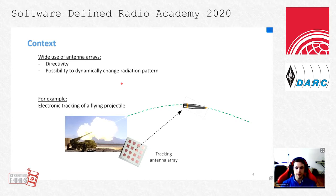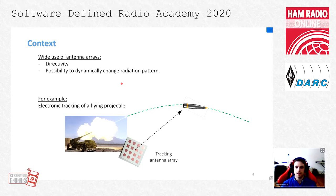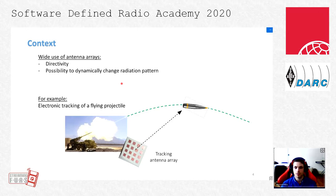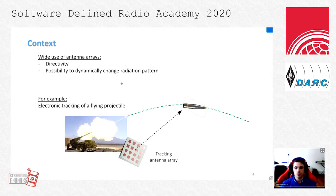As part of this team, we widely use antenna arrays for the high directivity they offer and the possibility to dynamically change their radiation pattern by weighting each antenna element signal. Among our applications, we can be willing to follow a projectile fired by a gun using antenna arrays, by electronically tracking this projectile by steering the main lobe of that antenna array.